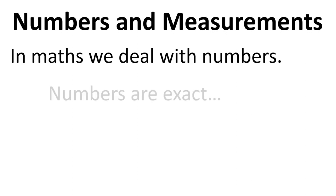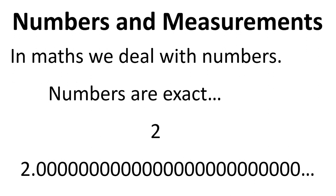In maths we deal with numbers and numbers are exact. So if I say we need to use the number 2, that is 2.0, it's exactly 2. So it's 2.000, all zeros.